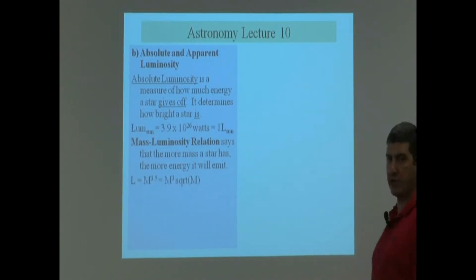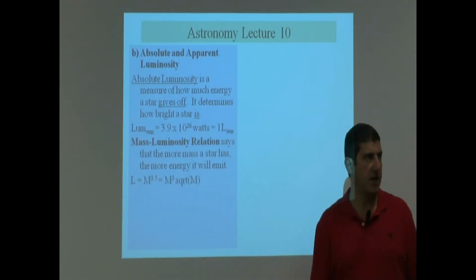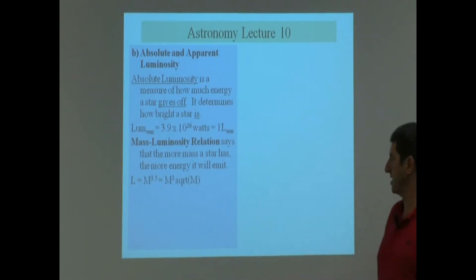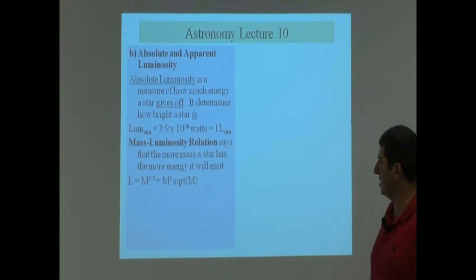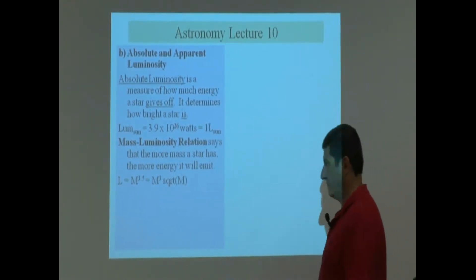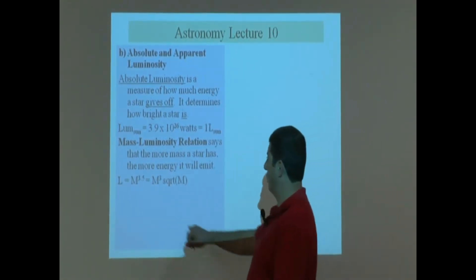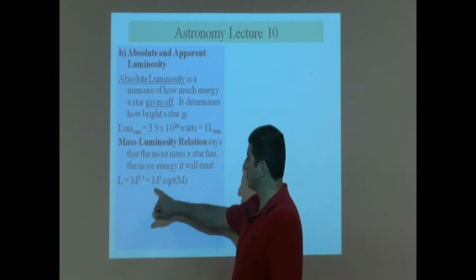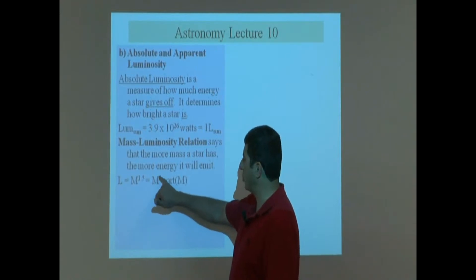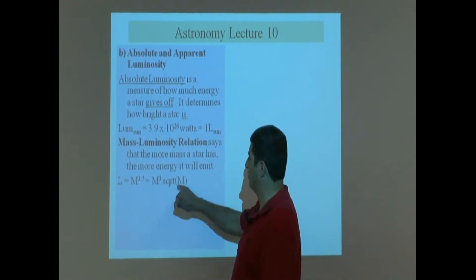The equation is L equals m to the power 3.5. Another way to write it is m cubed times the square root of m.